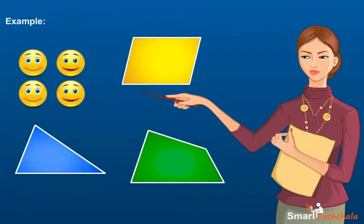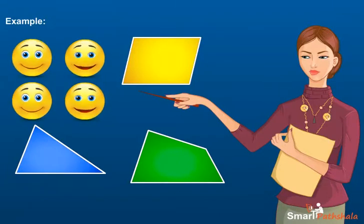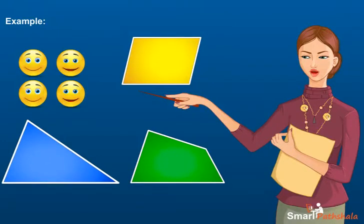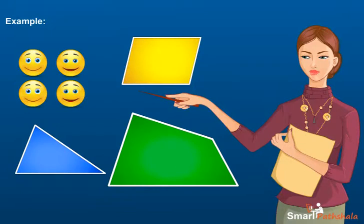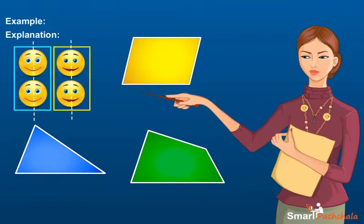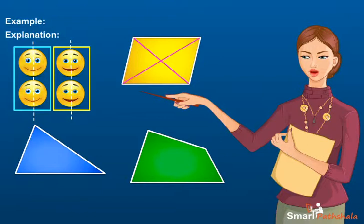Example: find if the following shapes can have a line of symmetry. Explanation: the first shape has a line of symmetry as shown. A parallelogram has two lines that divide it into two identical halves — these lines are its diagonals. Hence, the parallelogram has line symmetry.